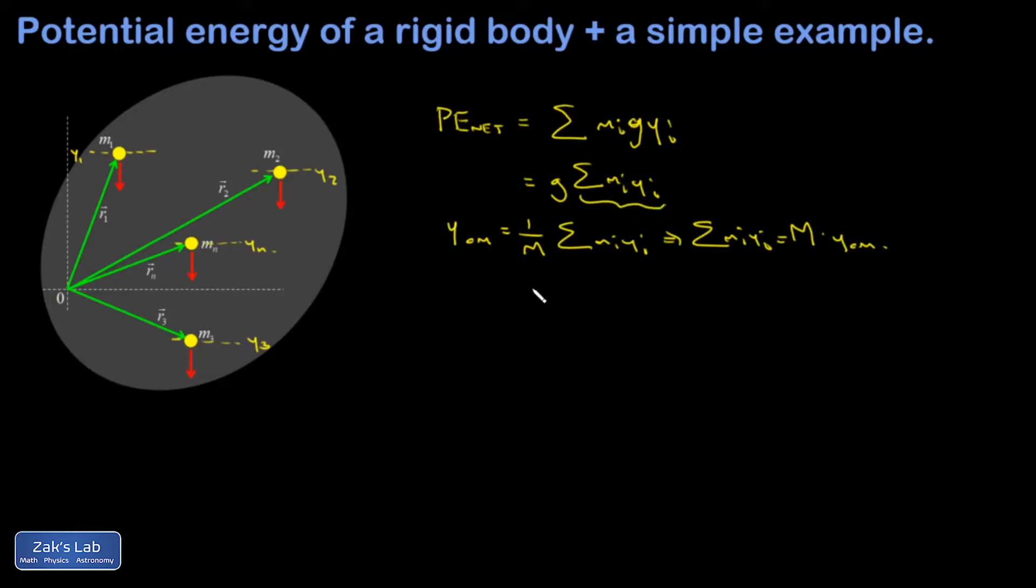Let's go ahead and replace the sum with that. So I end up with my net potential energy gravitational for an extended body is G times the total mass times the center of mass Y-coordinate. Which, if I turn it around a little bit, is the total mass of the object times G times the Y-coordinate of the center of mass.